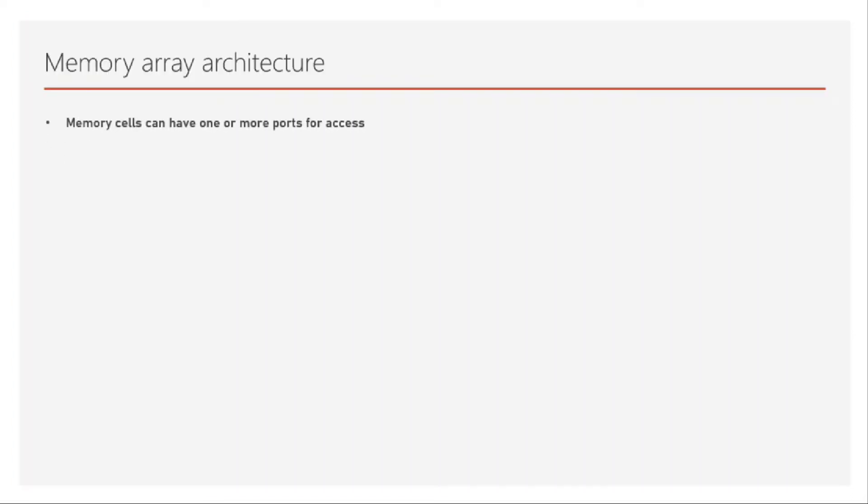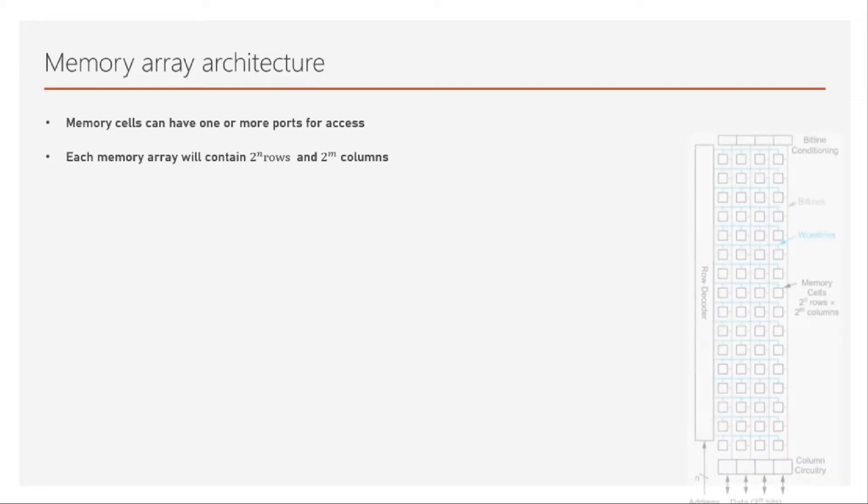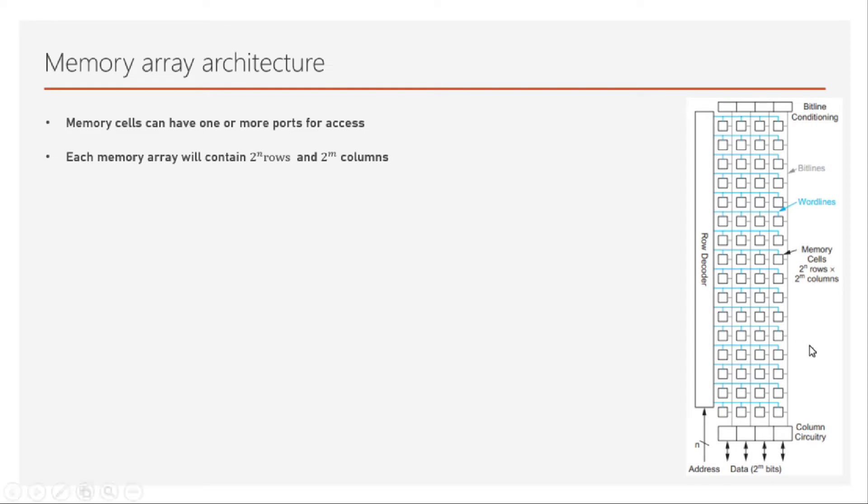The memory cells which we have already discussed can have one or more ports for access. When I say ports it's the combination of the control signals, the address signals and the data signals. Each memory array will contain 2 power n rows and 2 power m columns for an n by m memory. As you can see in this picture there are 2 power n rows and 2 power m columns.